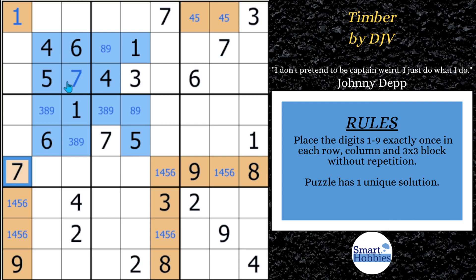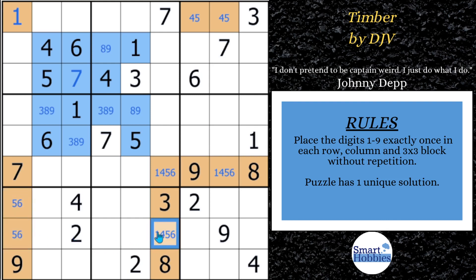Subscribe to Smart Hobbies. We've got this 1 and this 4, which means we can eliminate the 1 and the 4 from right there. And with this 5 we can eliminate a 5 from here, and we can eliminate a 1 from here. So I'm just kind of whittling down all of the candidates before we start doing some solving.